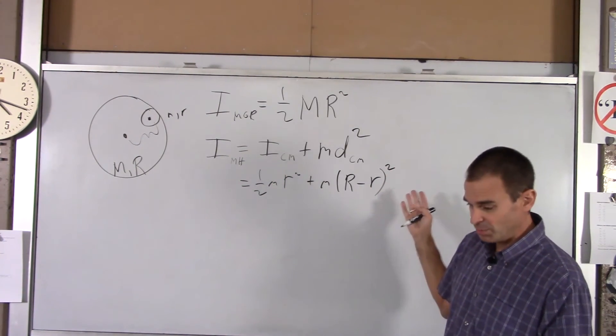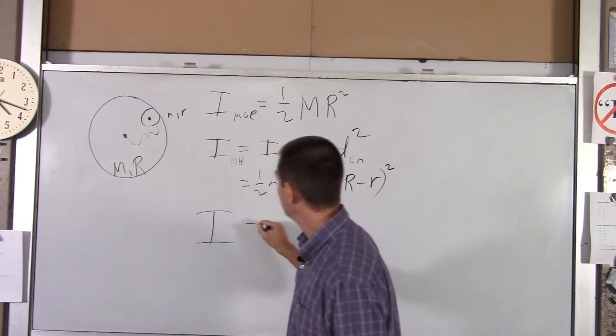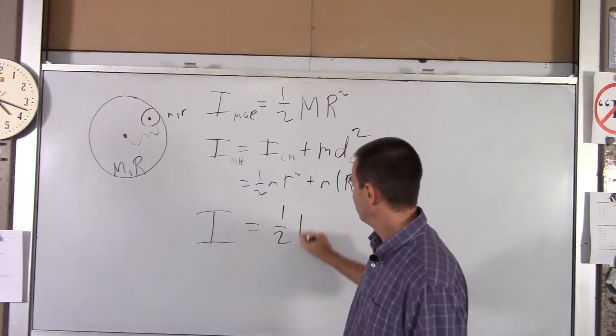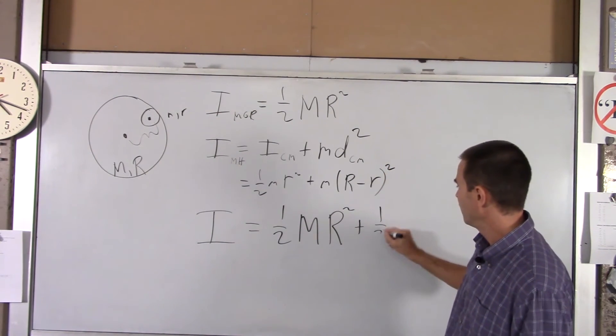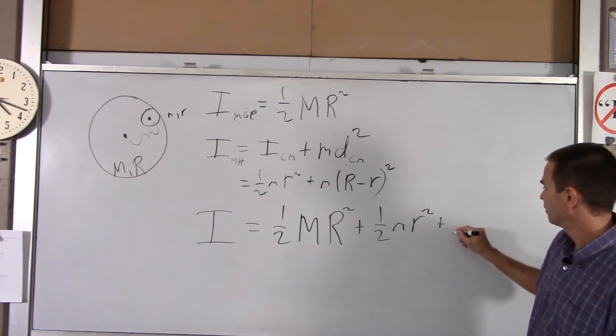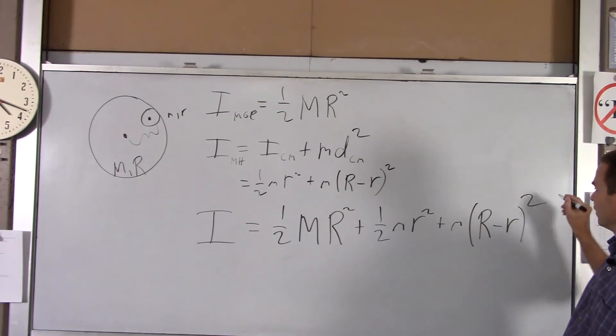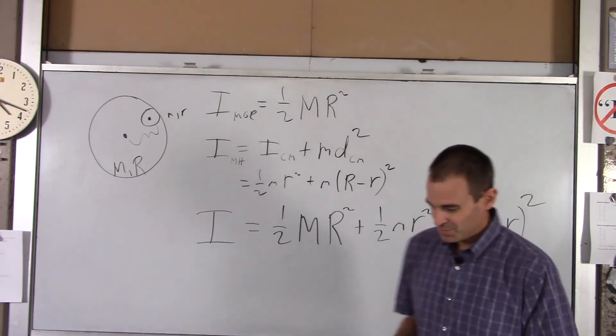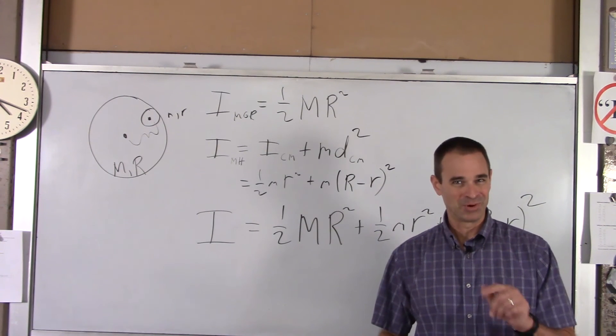So the total moment of inertia of your system is you just add those two up. So the total moment of inertia is one-half big M big R squared plus one-half little m little r squared plus little m times big R minus little r squared. That's it. So that's example one. The next one will be a little more involved.